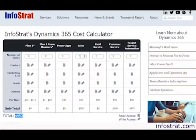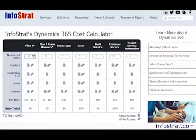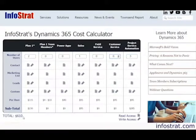Now if some of those people overlap — in other words, if there are users that are both involved in sales and in customer service or project service automation — we can move those over to the Plan 1 subscription. So instead of $950, I'm going to take two people who overlap, change this to show two people, and then remove those people from the individual products. We've dropped the cost to $610 because of those two users that overlapped.